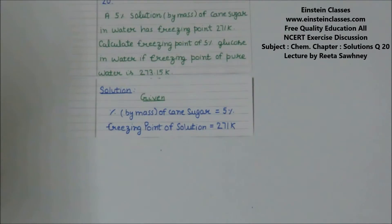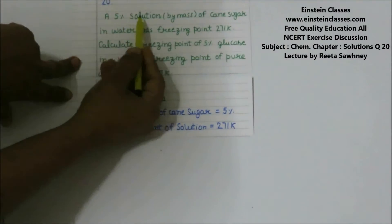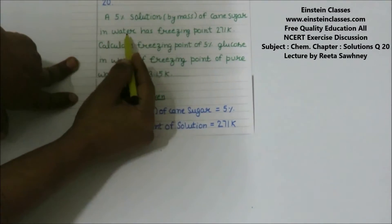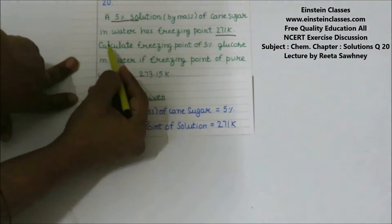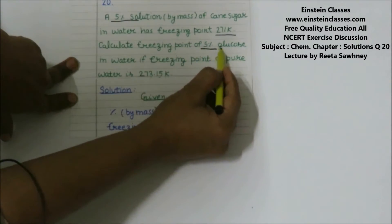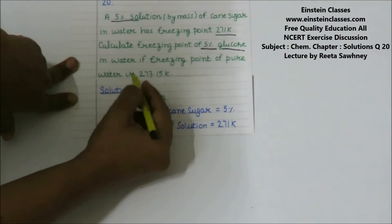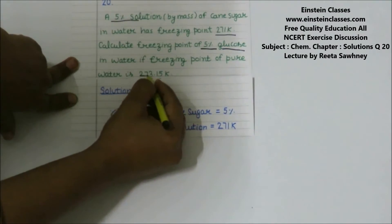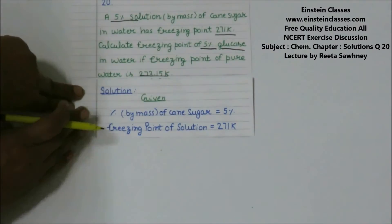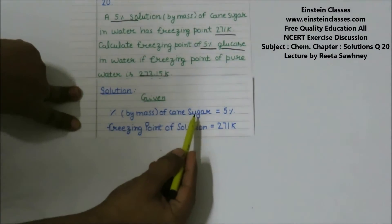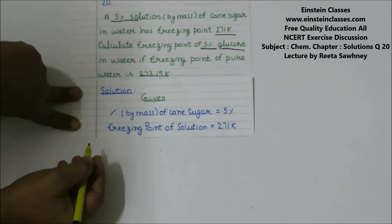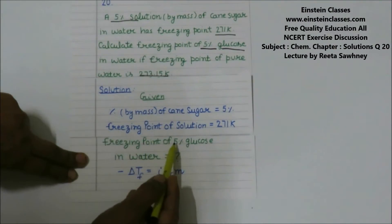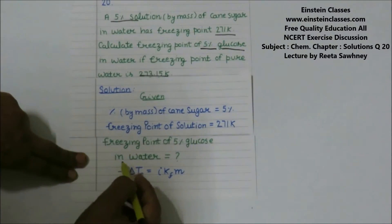We are going to discuss NCERT back exercise problem number 20. In this problem, a 5% solution by mass of cane sugar in water has a freezing point of 271 Kelvin. We need to calculate the freezing point of 5% glucose in water, if the freezing point of pure water is 273.15 Kelvin.